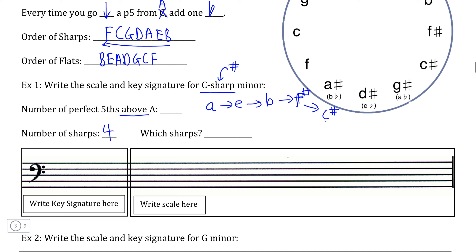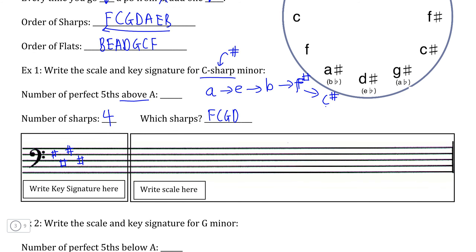According to the order of sharps, those four sharps are going to be F, C, G, and D. So if we write those sharps in our key signature — F sharp, C sharp, G sharp, and D sharp — and if we actually write the scale, let's position C sharp here, and this is going to be our La. So if we sing the minor scale going up: La, Ti, Do, Re, Mi, Fa, Sol, La. And there is our C sharp minor, or C sharp natural minor scale.